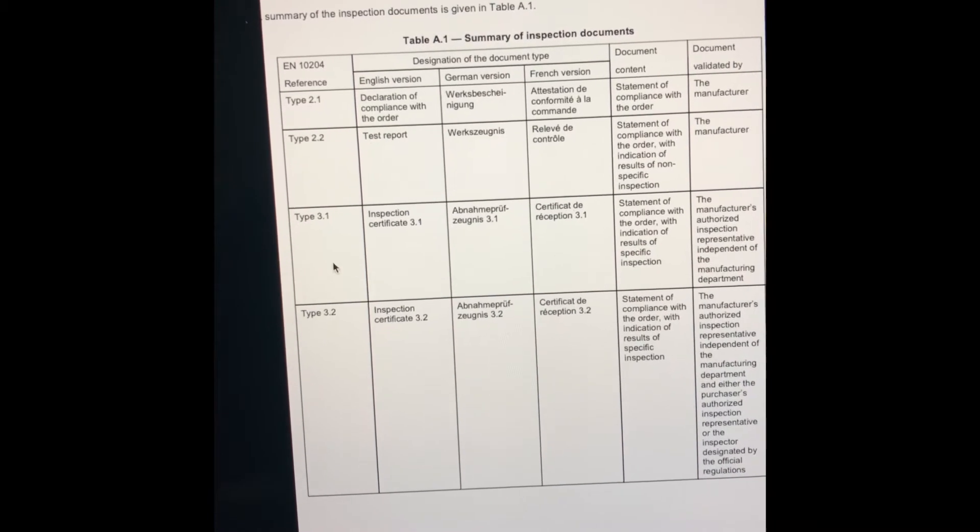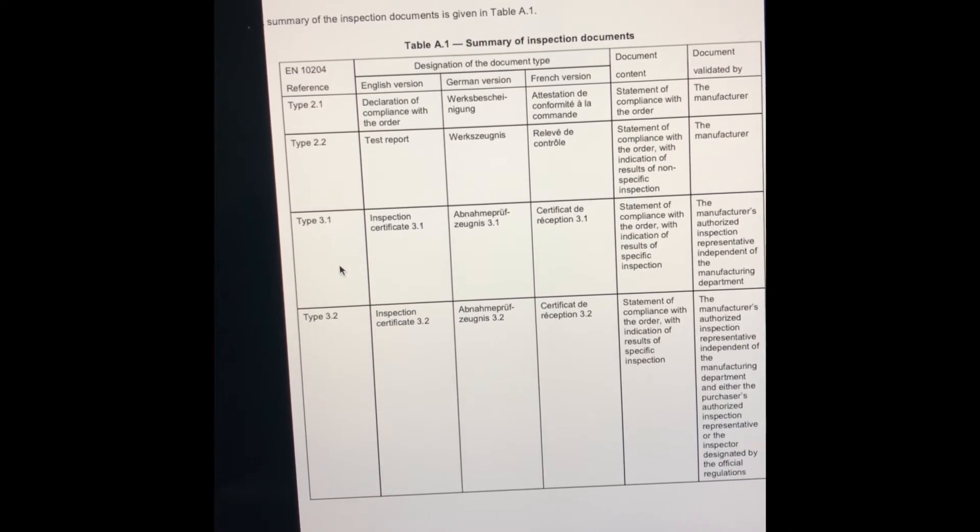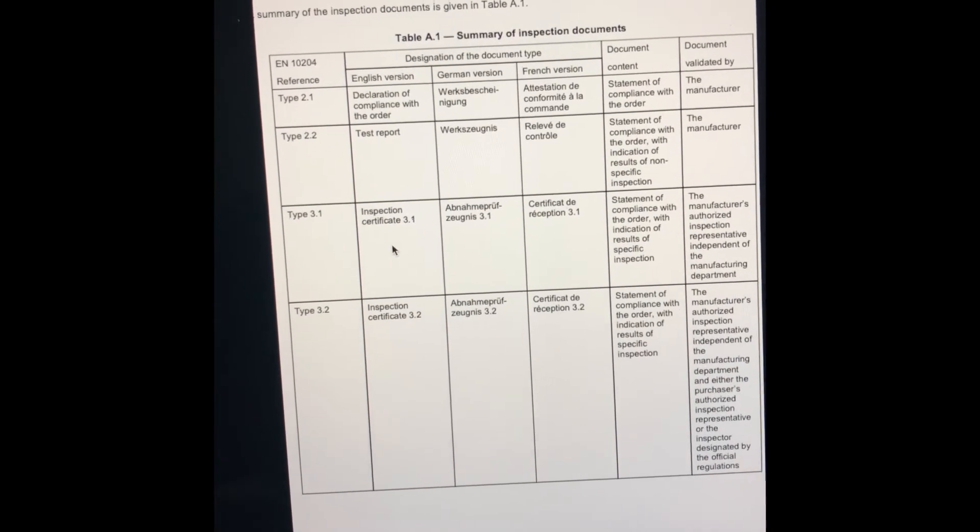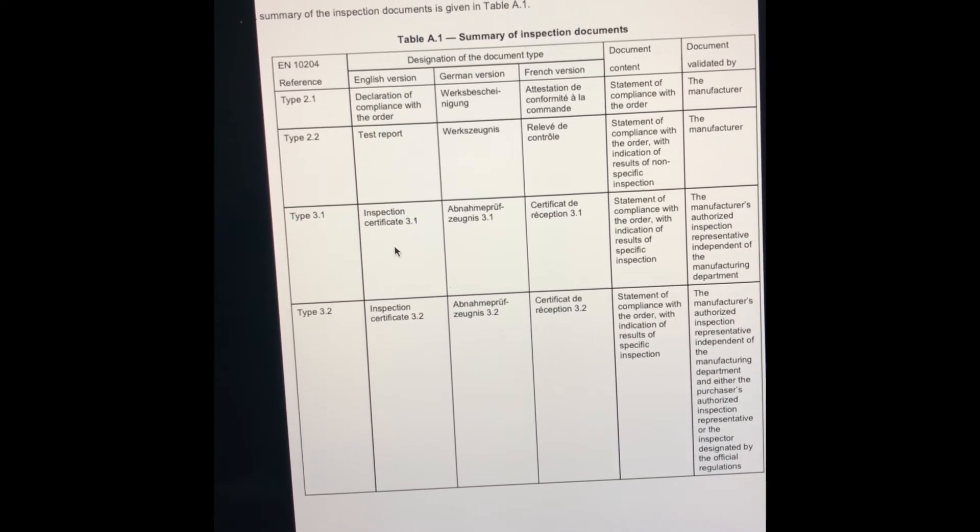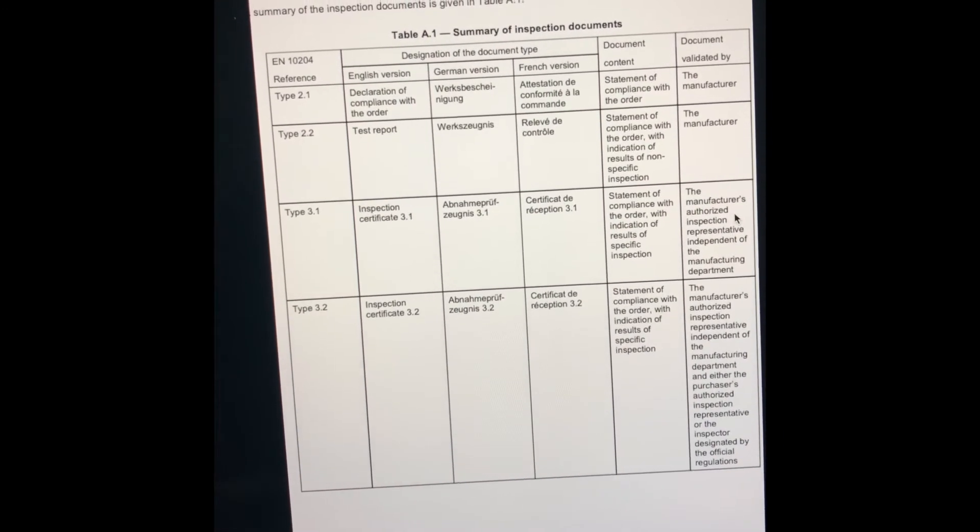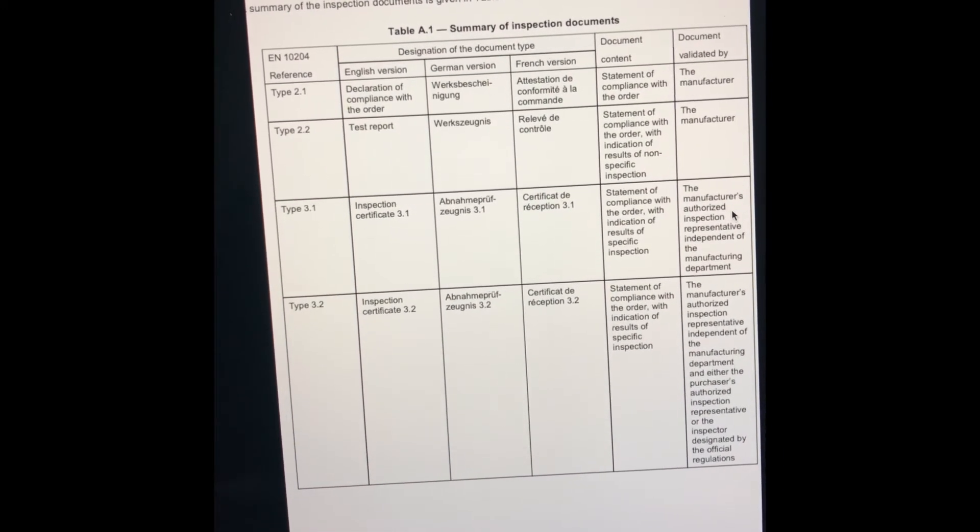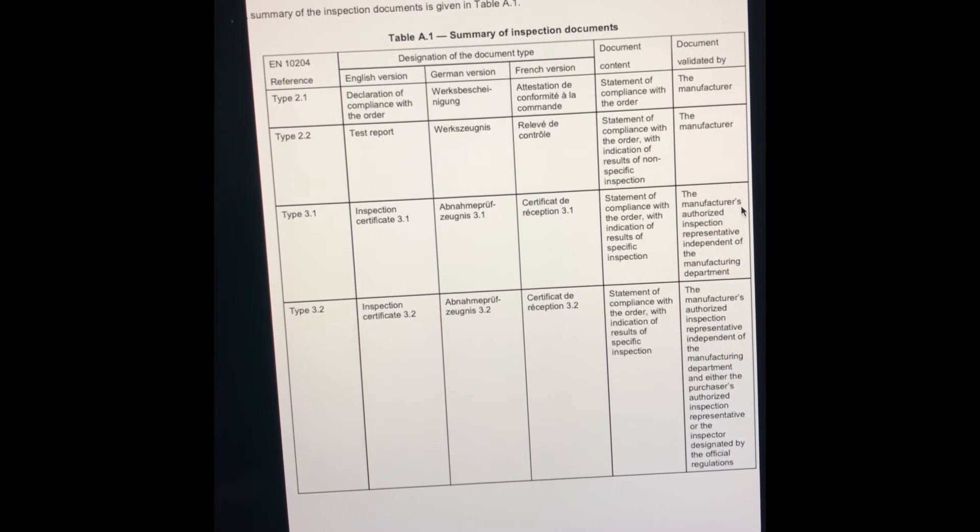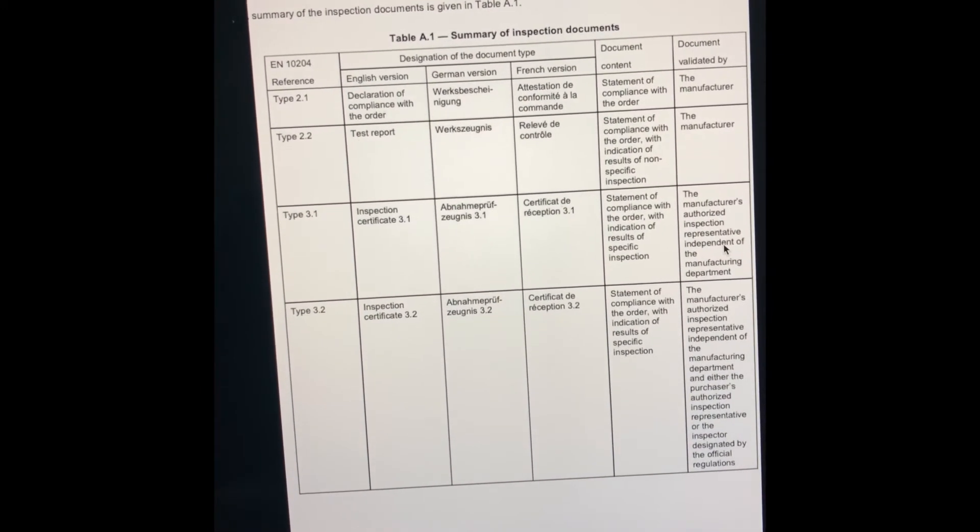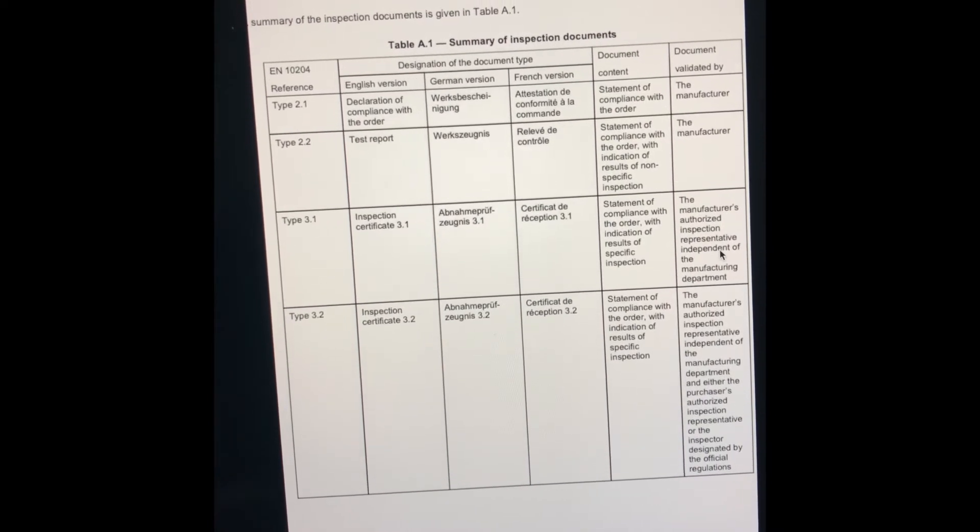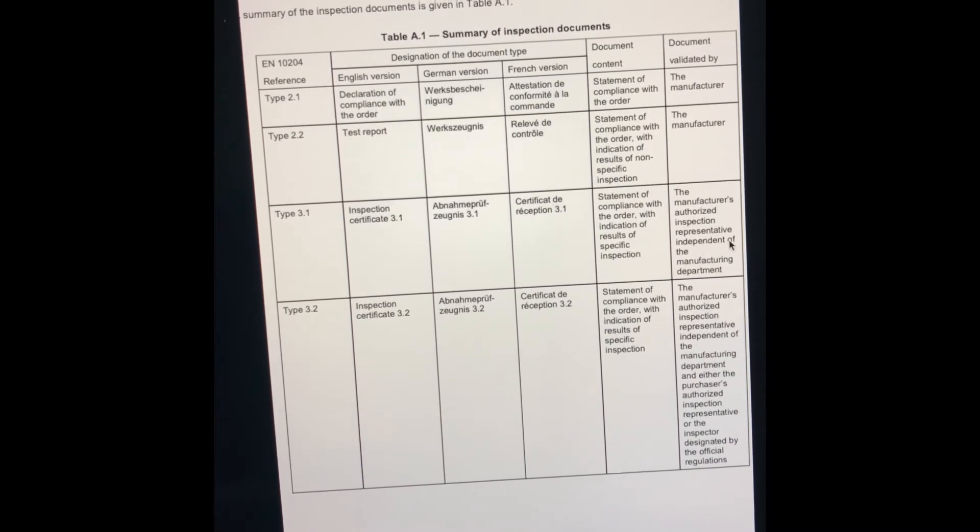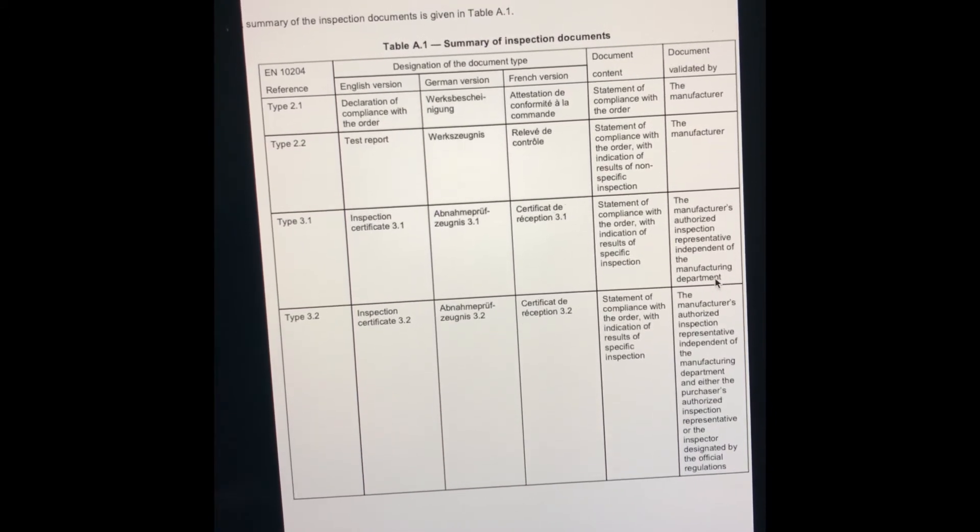Type 3.1 and 3.2 are very important. Type 3.1 is an inspection certificate - an MTC will be provided and authorized by the manufacturer's authorized inspection representative. This person is independent of the manufacturing department.